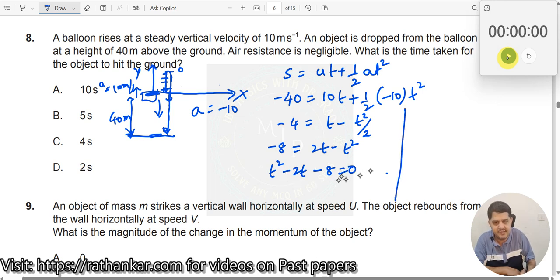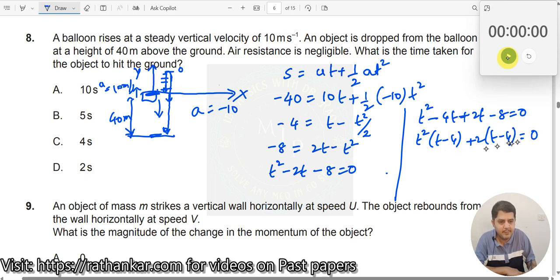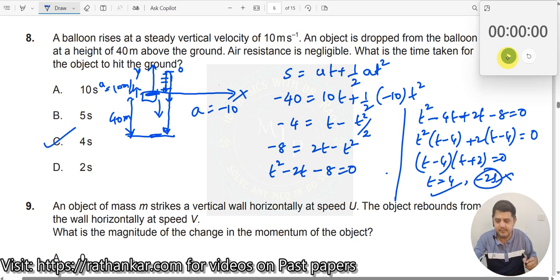Now I need to factorize this. I do this as t square minus 4t plus 2t minus 8 equals 0. I can write t into t minus 4 plus 2 into t minus 4 equals 0. So t minus 4 into t plus 2 equals 0. t equals 4 seconds or minus 2 seconds. Minus 2 is not possible because time is always positive. So t equals 4 seconds is the correct answer.